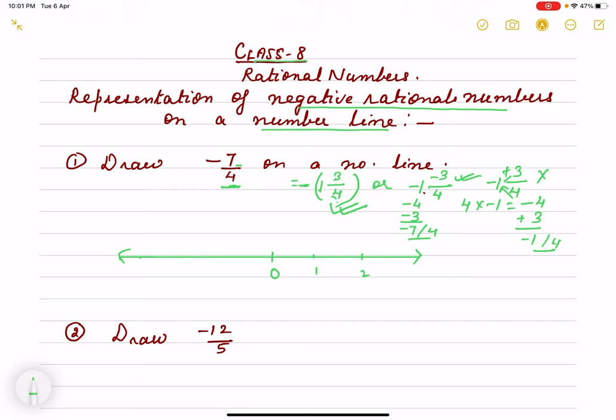For minus 1 3 by 4, it comes after minus 1. We have to divide minus 1 to minus 2 into 4 parts. Here is minus 2. So we mark minus 1 1/4, minus 2 by 4, and here is minus 1 3/4. This point will be your minus 1 3/4 or minus 7 by 4. Point P is minus 7 by 4.